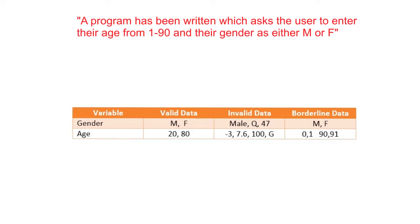Then we have borderline data. For gender, the borderline data is the same and the test is not really relevant. For age it is really important. We asked that the program should allow people to enter their age from 1 to 90. It's quite common at these boundaries that people use greater than or equals to, greater than, or less than, and forget to test the actual extremes. So we would expect 0 to be outside the range, but 1 should be valid. 90 should be valid, but 91 should be invalid. We're supplying data to check that the extremes or the boundaries are handled correctly.